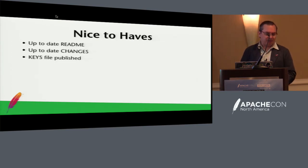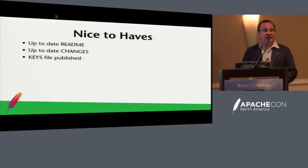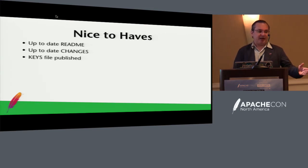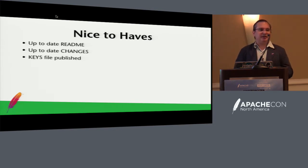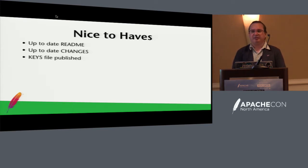A few nice-to-haves that are not required but make things easy: having an up-to-date readme noting what has changed from one release to the next. For example, if you have a complex licensing situation and your last release passed, noting in the readme that no third-party files have been added means reviewers don't have to re-check licensing. List all the changes, and make sure you have a keys file published so people can verify the signatures on your release.